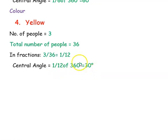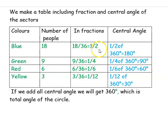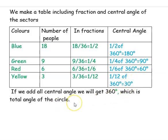Now we have found out the central angle for all 4 colors. We make a table including the fraction and central angle, so that it is easy for us to draw the pie chart. I have written all the colors given, the number of people preferring each color, the fraction, and the central angle. If you add all the central angles, we will get 360 degrees, which is the total angle of the circle.